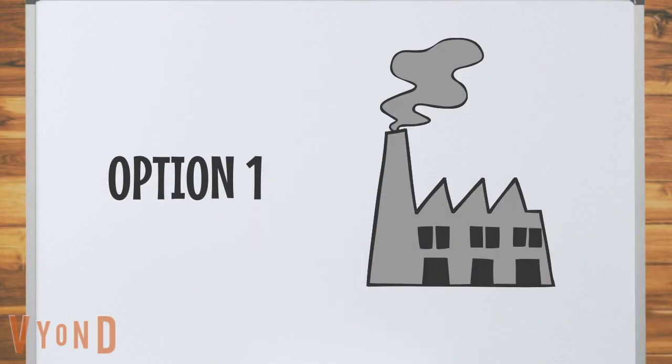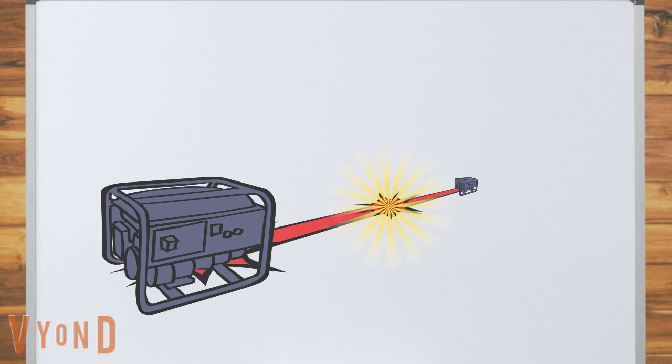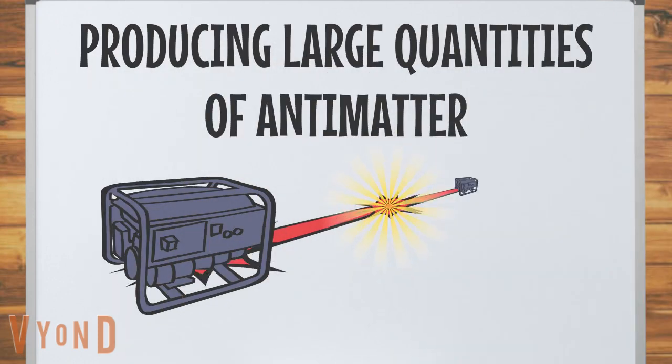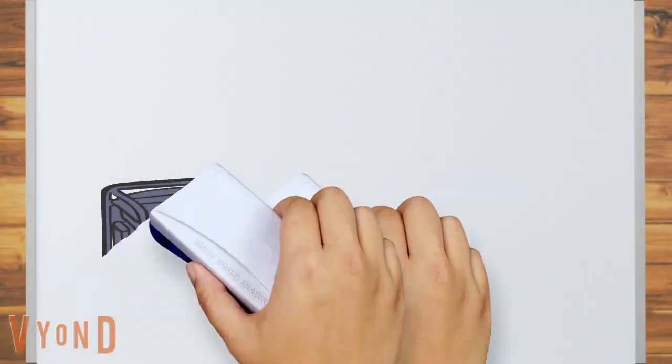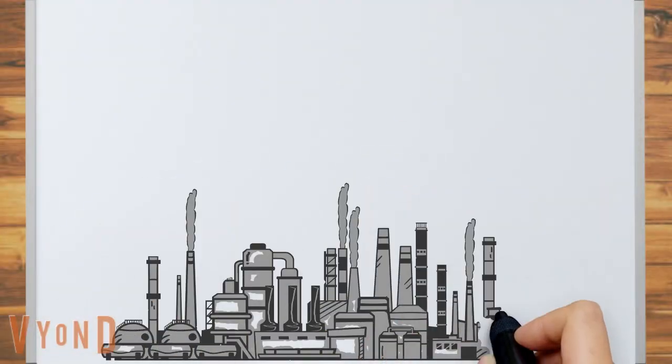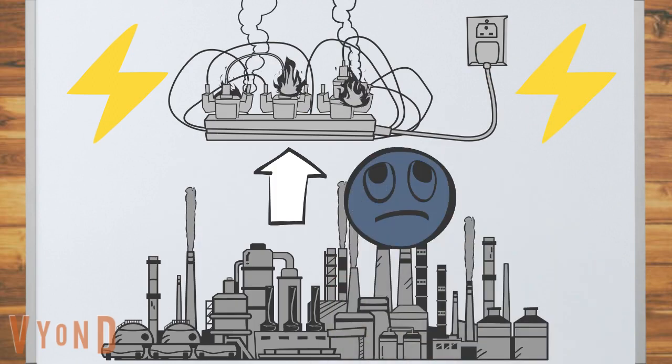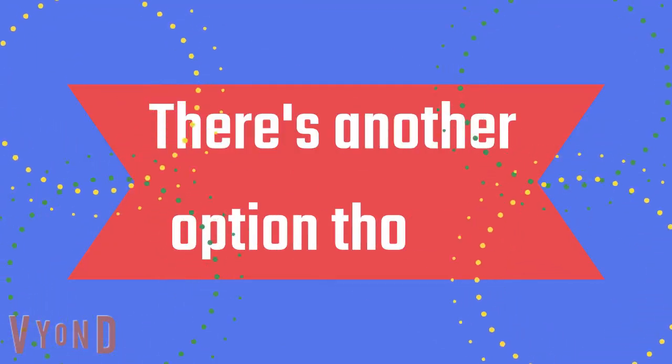The first is antimatter factories, specially designed ion-beam colliders with the sole intent of producing large quantities of antimatter. However, such factories would require, let's just say, unsustainable amounts of electricity. There's another option, though.